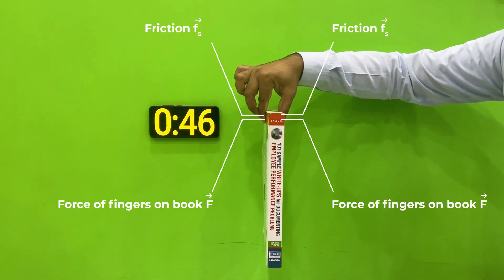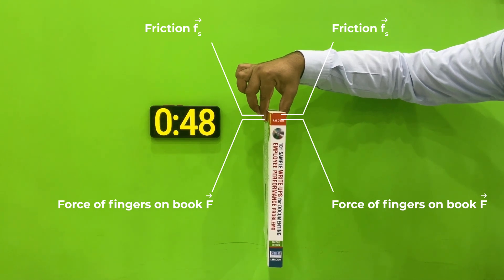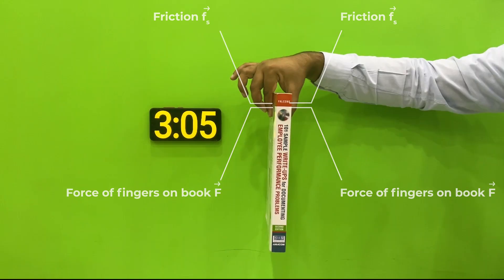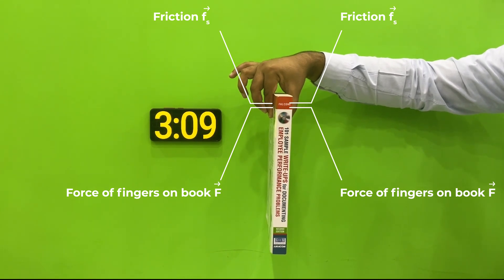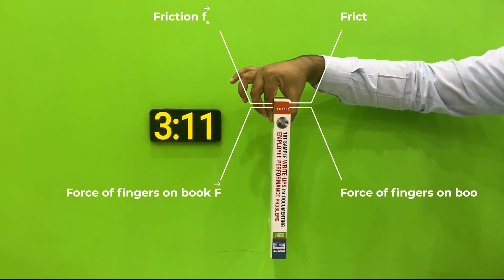The book is in static equilibrium, so the net force is zero. The force of the fingers on the book is the reaction force to the normal force of the book on the fingers.